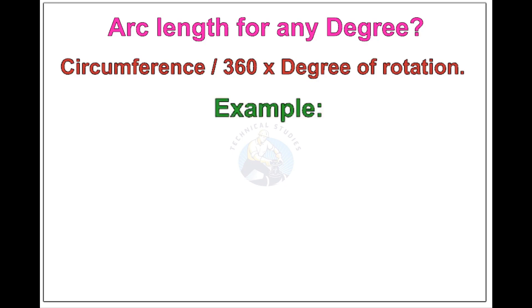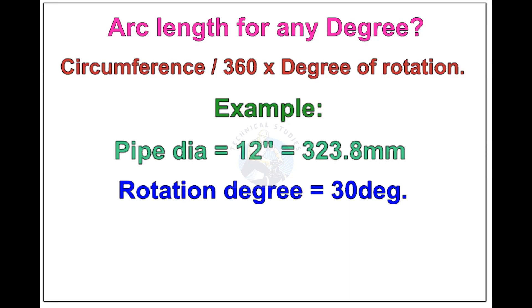Let us check the arc length of 12 inch pipe rotated 30 degree. Apply the formula. The answer is 84.8 millimeters.